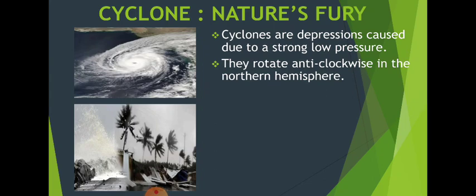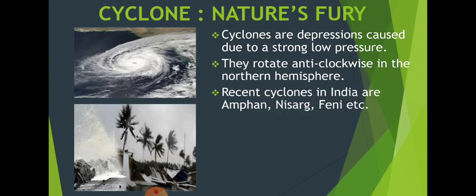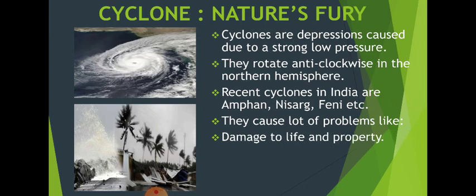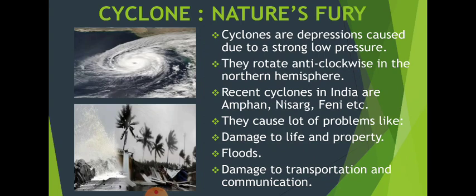Cyclones are generated due to pressure differences and move anti-clockwise in the northern hemisphere where our country is located. They cause rainfall, damage, and destruction on a very large scale in coastal areas. Recent cyclones in India include Amphan, Nisarga, and Fani. The damages caused by cyclones include damage to life and property, floods, and disruption of transportation, communication, and electric supply — severely affecting the lives of people in cyclone-hit areas, sometimes causing deaths.